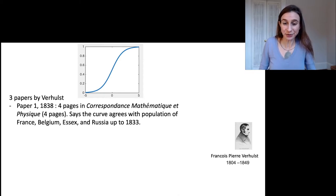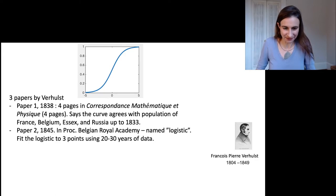The first paper was in 1838, a four-page paper that said this curve agreed with the population of France, Belgium, Essex, and Russia up to 1833. He didn't say how he fitted the models to the data, but claimed he did. In the second paper in 1845, he named it the logistic function. That's where the name comes from.